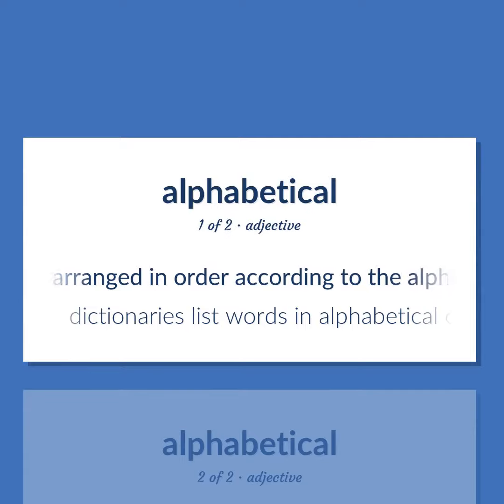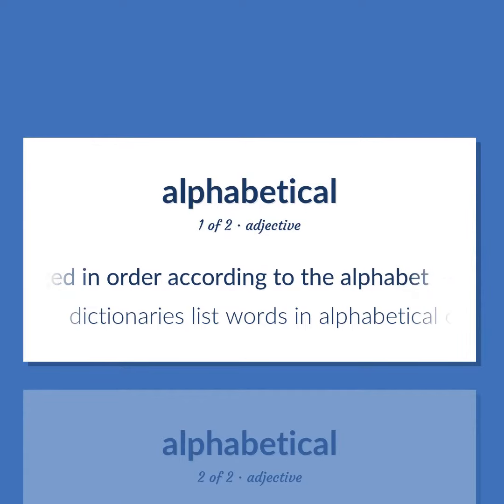Alphabetical: arranged in order according to the alphabet. Example: dictionaries list words in alphabetical order.